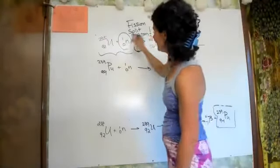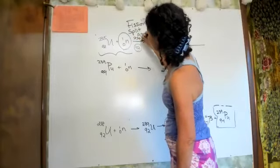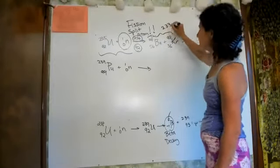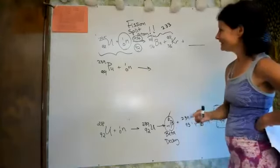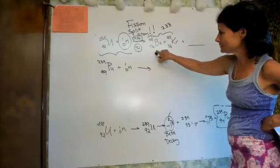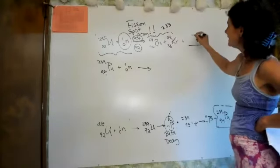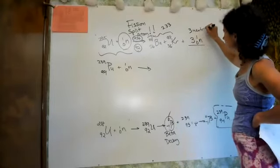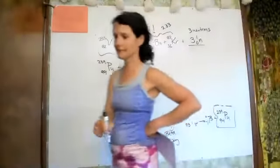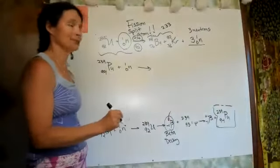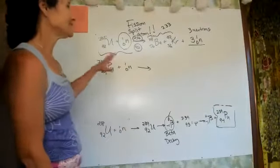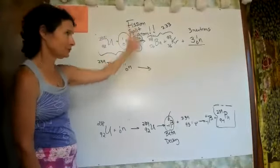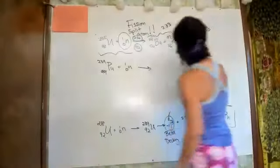Since we can't add any protons — the protons already added up — the missing three pieces must be three neutrons. That's what fission does: 200 possible splits, always told it's fission, it gives two pieces, and however many neutrons needed to balance the equation. This is called a chain reaction.